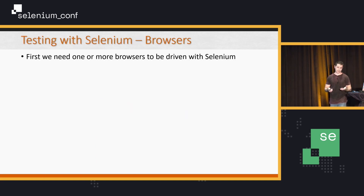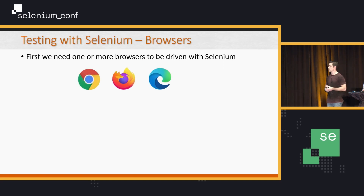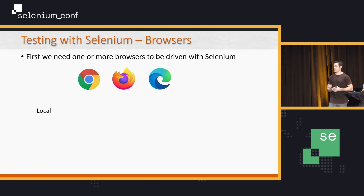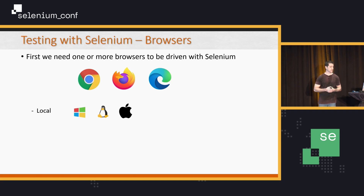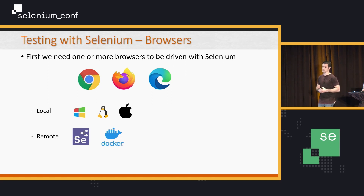Most people that use Selenium use it for testing. So how can you do testing with Selenium? For that we need other elements. Of course, we need browsers — Chrome, Firefox, Edge, even Safari. They can be local, installed on your machine, on Windows, Mac OS, or Linux. They can be remote, served by Grid, or even executed in a Docker container.